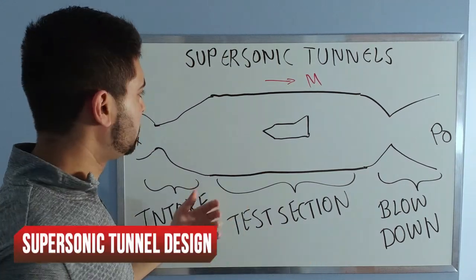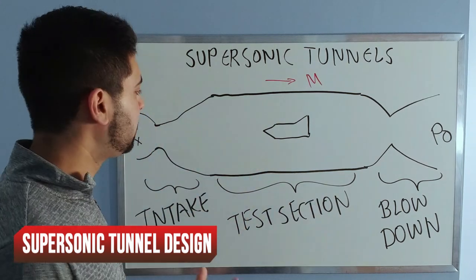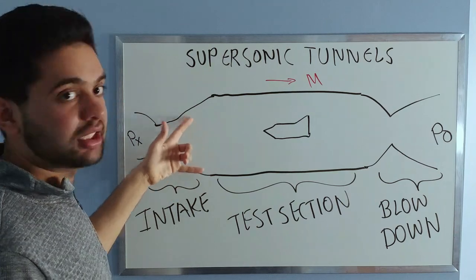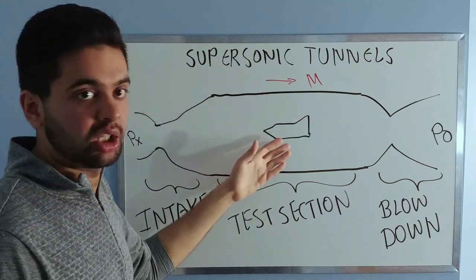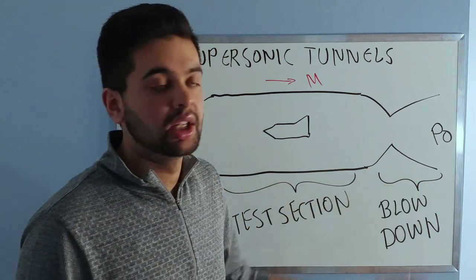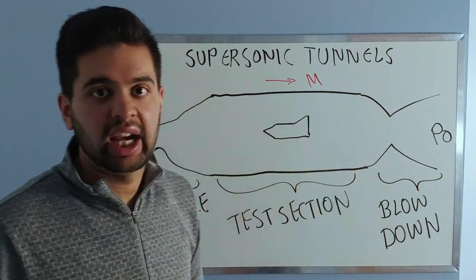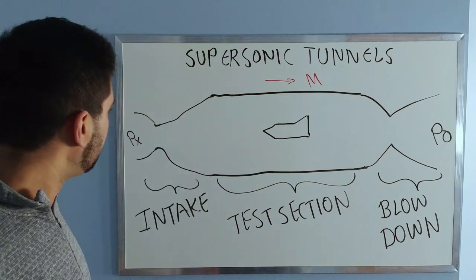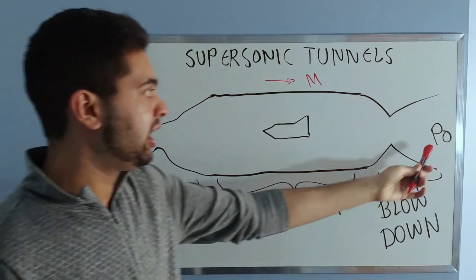Here we have a cross section of a supersonic wind tunnel. It basically consists of an intake which is a rocket engine nozzle, connected to a test section in which your model airplane or rocket can be tested, then you have a blow down section. You have a pressure here and the pressure there.